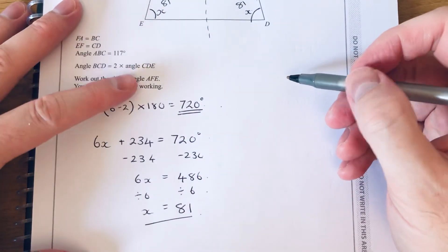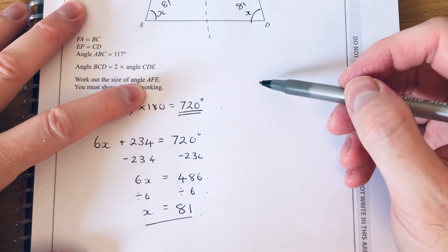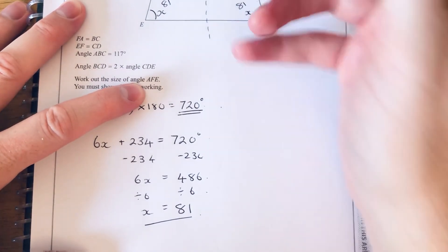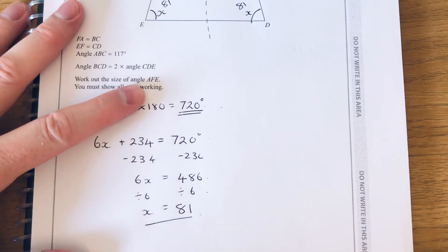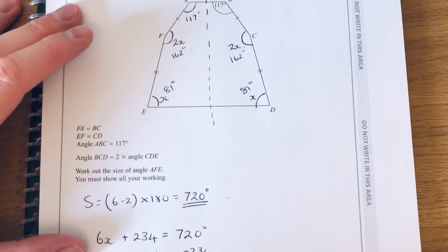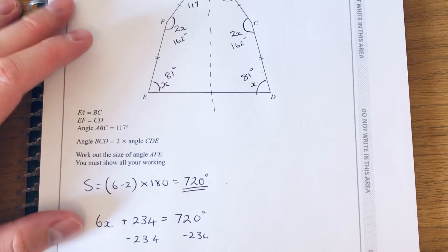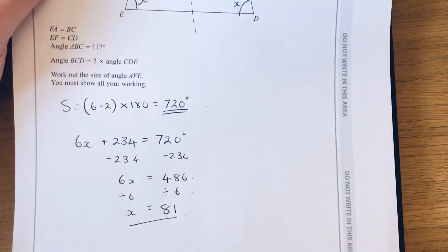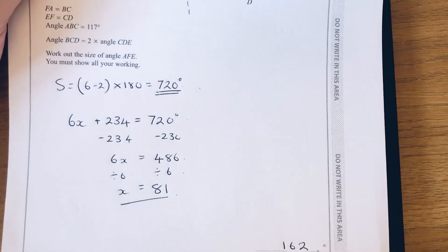Which angle did we need? We needed angle AFE, which is the 2X angle — so that's 162 degrees. I hope you liked this video; if you did, make sure you like and subscribe. Thanks for watching, guys — bye bye!